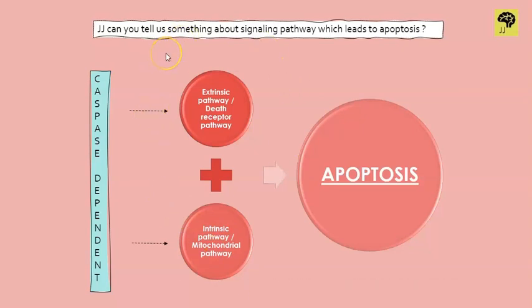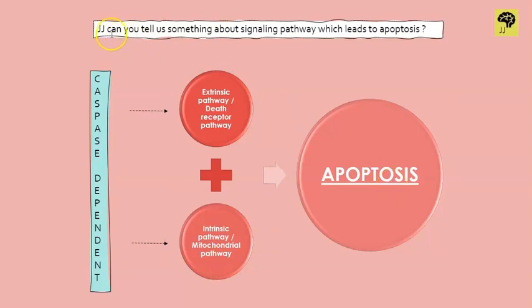Both pathways are dependent on something else — caspases. They are caspase-dependent. Just as we as humans depend on our parents, teachers, friends, and colleagues to make our lives easier, these caspases are responsible for making these pathways work. They help in the functioning of pathways that lead to apoptosis, so we should understand what a caspase is before we get into the major topic.